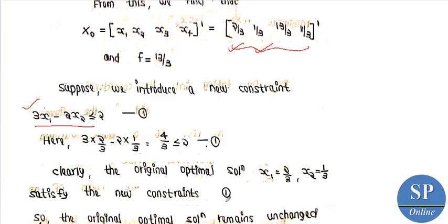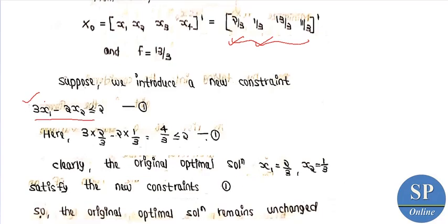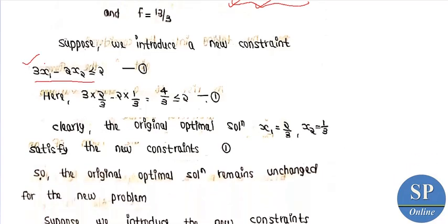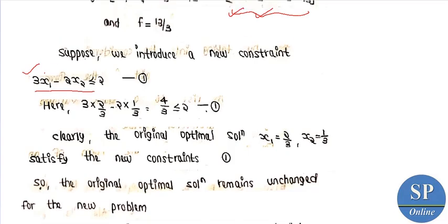So the original optimal solution remains unchanged for the new problem. We can use the optimal solution as-is for the modified problem with the new constraint.